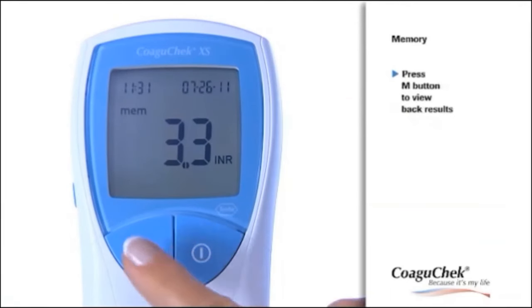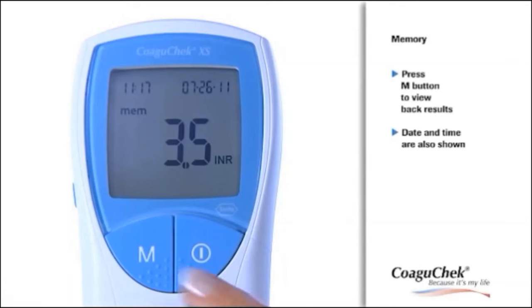To view back results, press the M button. Date and time are also shown, so that it is easy for you to enter the test results in your coagulation diary and for your doctor to interpret the values, so you can be confident that your therapy can be optimally geared towards your needs.